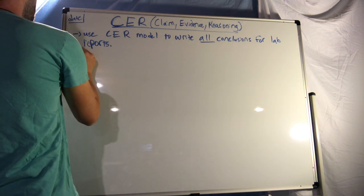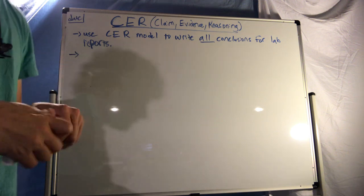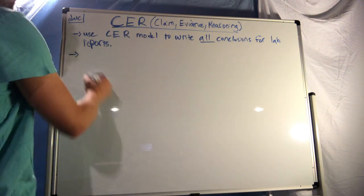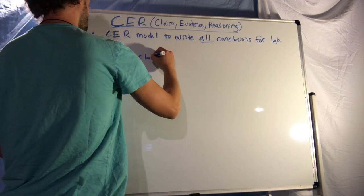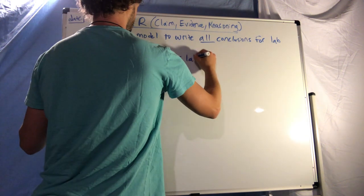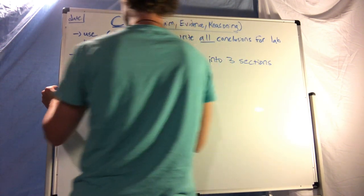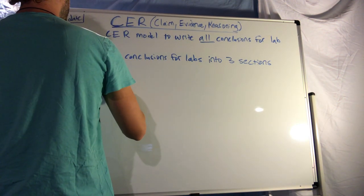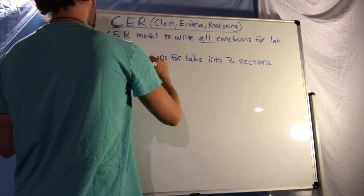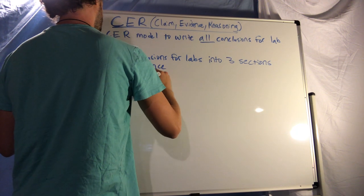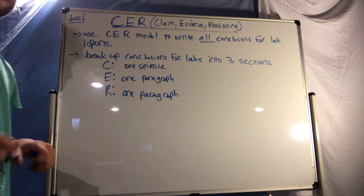A good thing about the videos is you can pause, write it down, and then start back up again. For conclusions on labs, I'm going to require them to be broken up into three sections: C, E, and R. C will usually be one sentence, E will be one paragraph, and R will be one paragraph.